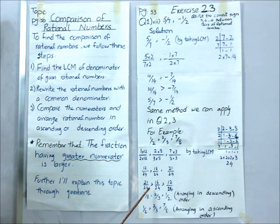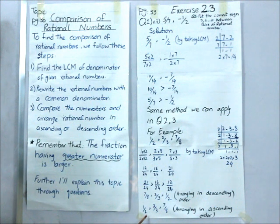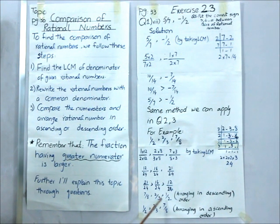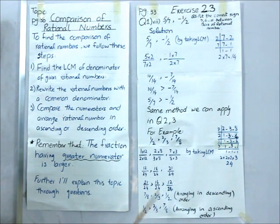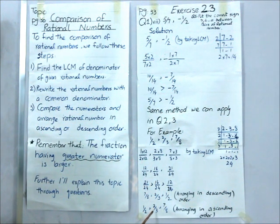I can repeat the whole process to arrange my rational numbers in ascending order — the same method, nothing changed. Ascending means smaller to greater. So the smallest number here is 12 by 24, meaning I arrange 1 by 2 first, then 2 by 3, then 7 by 8. Remember: in ascending order we arrange from smaller to greater, and in descending order from greater to smaller. Through these steps, we can easily arrange rational numbers in both orders.